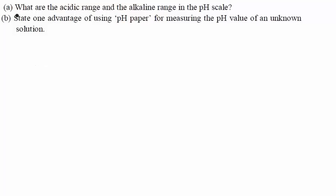Look at the first part of this question: what are the acidic range and the alkaline range in the pH scale? Alkaline means basic range — alkalines are water-soluble bases, so you can also call this the basic range.